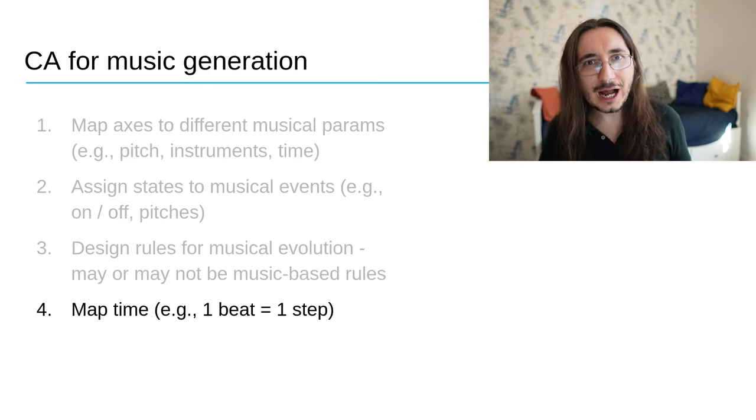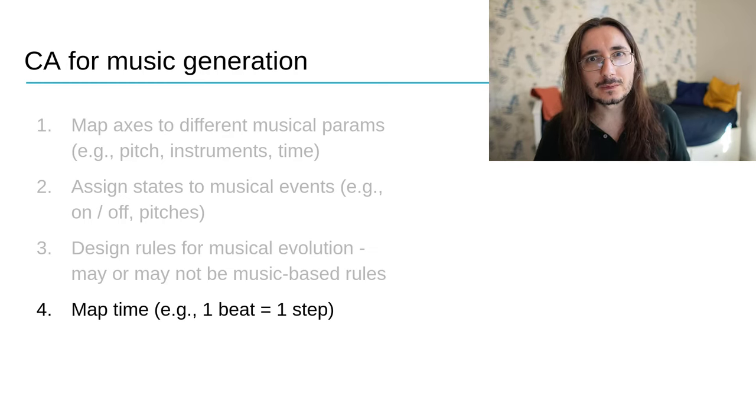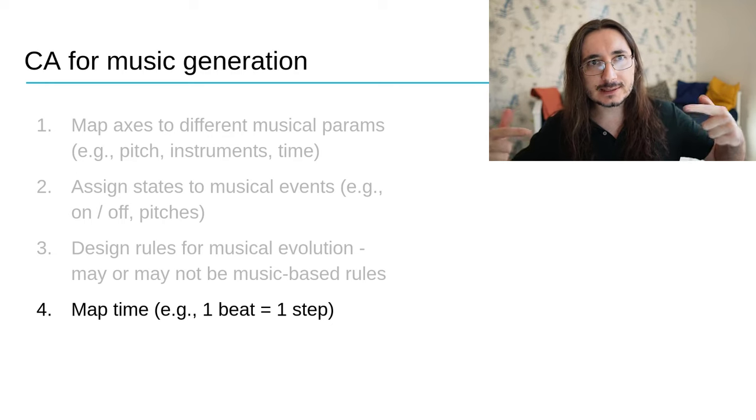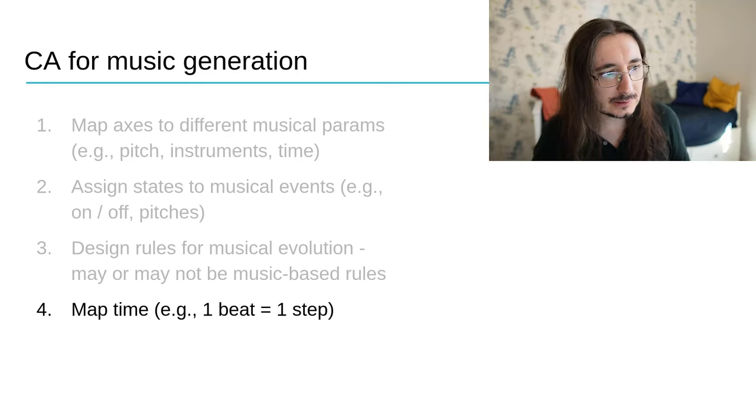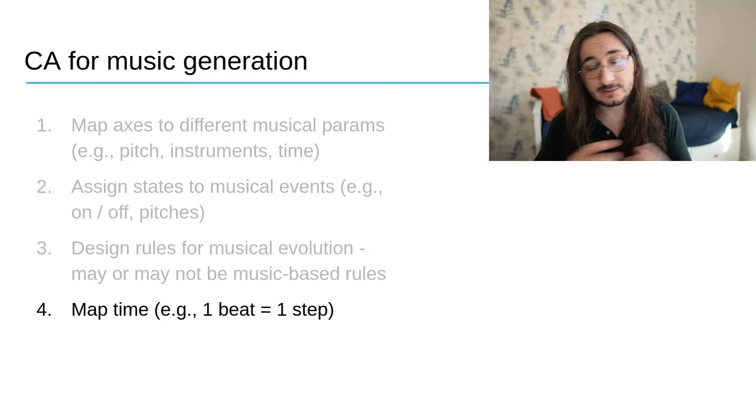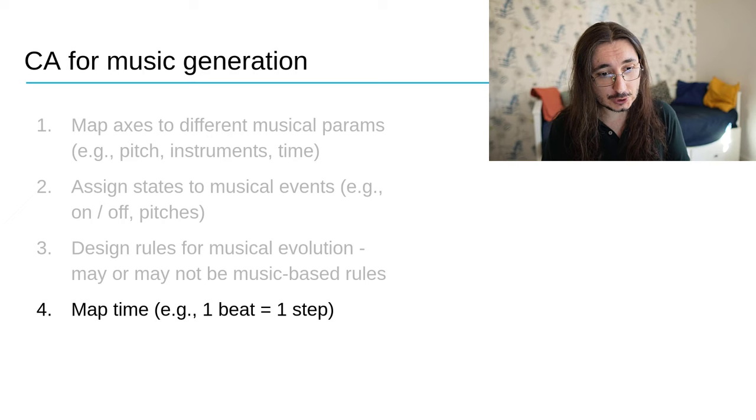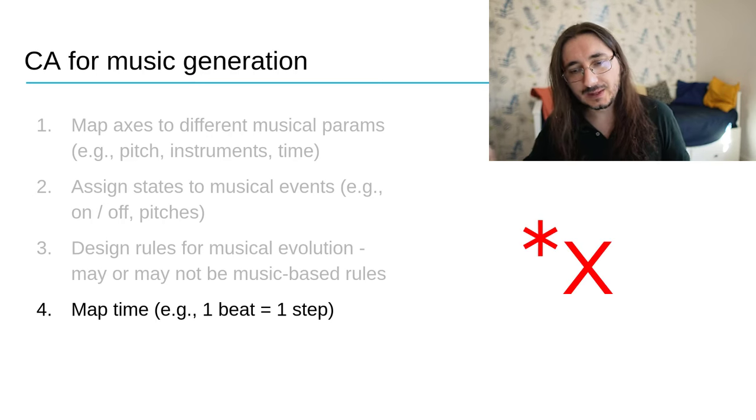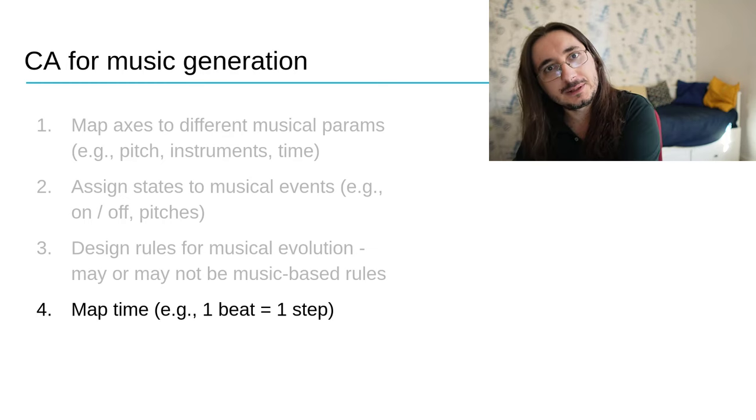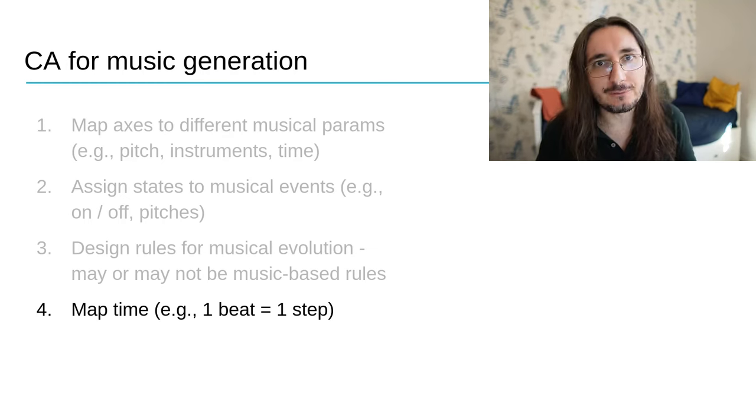Finally, it's time to mapping time. So, how do we get time in the cellular automaton that we are building? This could be, for example, mapped onto one of the axes. So, each, for example, if you take y as time, then basically each column is something that happens at a particular beat, and each column represents a particular beat. Or, there may be different mappings.